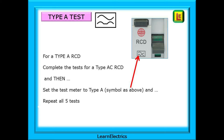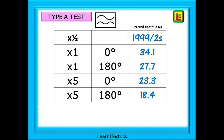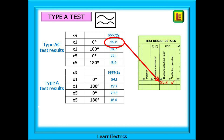To test a type A RCD you will complete 10 tests in total. Complete the five tests exactly as for a type AC RCD, and then set the test meter to type A and repeat all five tests on this A setting, making a note of the results as you go. You should now have two sets of test results for the one type A RCD — a set of type AC results and a set of type A results. Now choose the worst case results — the highest readings — for the schedule of test results, and remember to press the T or test button.